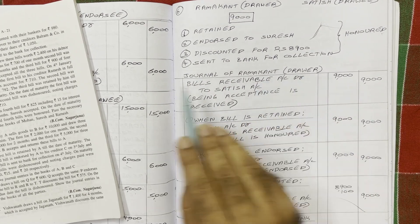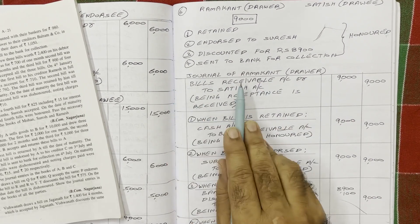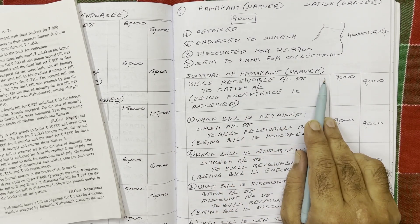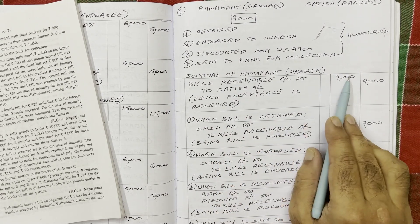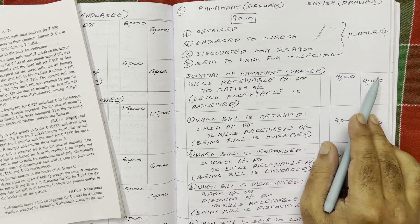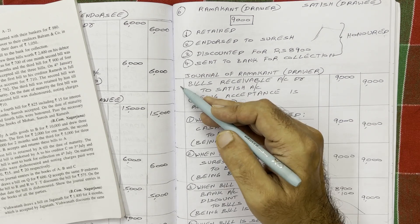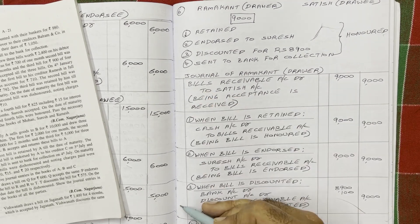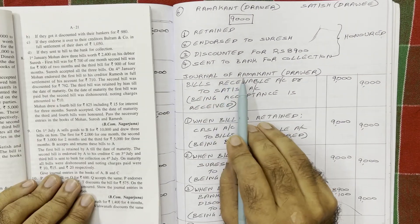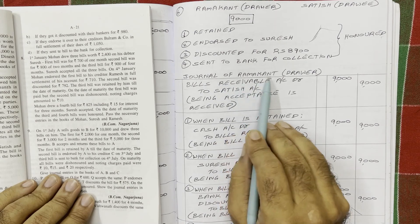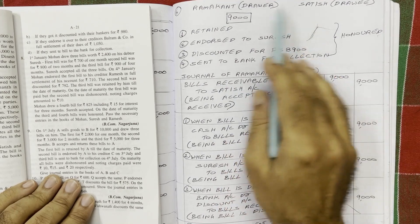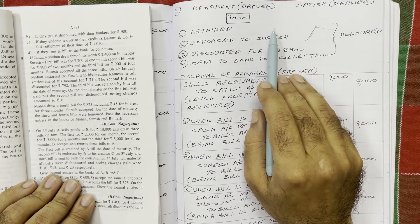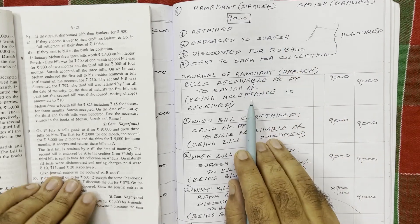This is the journal of Ramakanth (drawer). The columns are: date, particulars, ledger folio number, debit, and credit. Dates are not given in the question so we need not write the dates. As we are writing journal entries in Ramakanth's books, all these transactions have to be analyzed from Ramakanth's point of view.